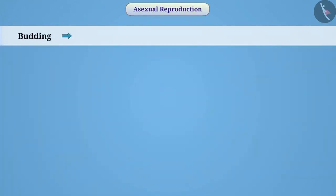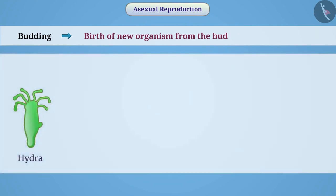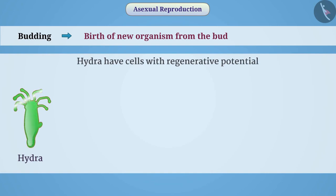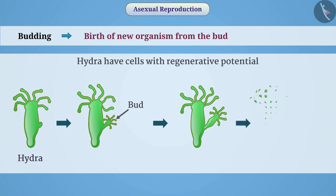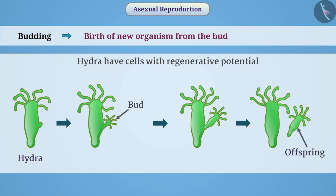Budding: Some organisms, such as Hydra, have cells with regenerative potential. When the Hydra is fully grown, the regenerative cells divide by creating a bulge — a bud — on the body wall. This bud develops into a small Hydra. Upon sufficient growth, these organisms separate from the parent Hydra and become independent organisms.